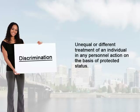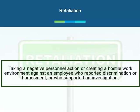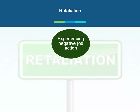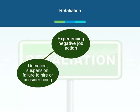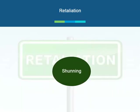Discrimination is unequal or different treatment of an individual in any personnel action on the basis of protected status. Retaliation is taking a negative personnel action or creating a hostile work environment against an employee who reported discrimination or harassment, or who supported an investigation. It is a form of punishment for coming forward with a complaint or reporting inappropriate behavior, whether or not the complaint or report was substantiated. Some examples include experiencing negative job action such as demotion, suspension, failure to hire or consider hiring, failing to treat impartially when making employment decisions, undesirable job assignment, or shunning.